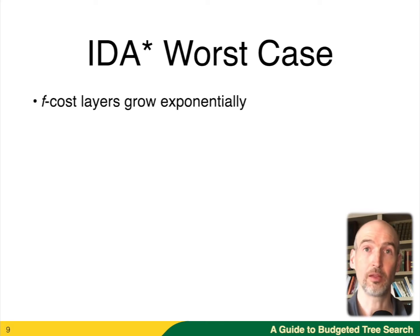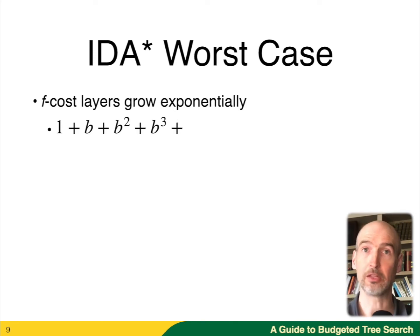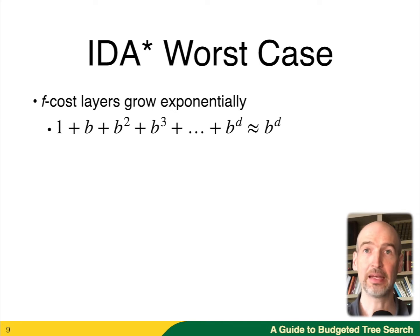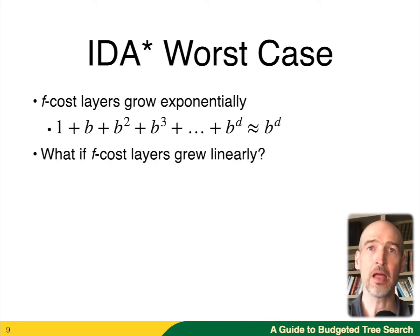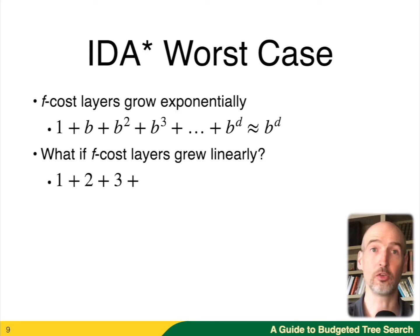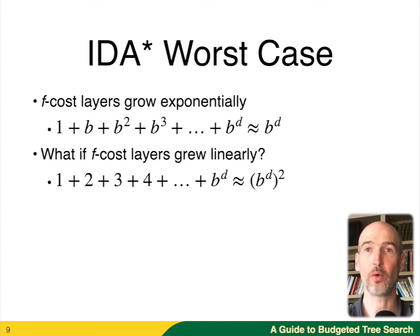IDA* assumes there will be exponential growth. If you do, you start with one node at the root, and this grows B nodes, B squared, B cubed, all the way up to B to the D, where B is the branching factor. When you grow exponentially like this, the overhead of doing the multiple iterations is amortized away, less than a constant factor. However, if the F costs only grow linearly, we'd start with one node but then may only see 2, 3, 4, 5 in our iterations. When you add those up, you get B to the D squared — really bad in practice.